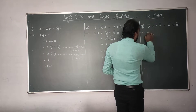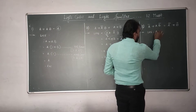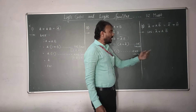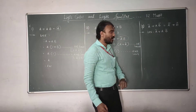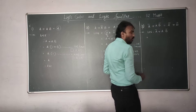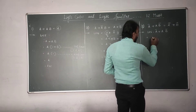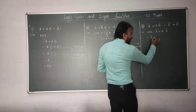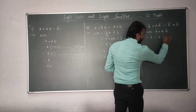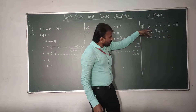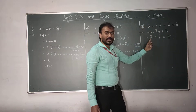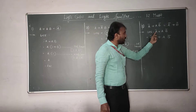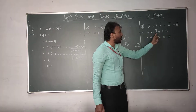I start with the LHS: A complement plus AB complement. Is there anything common between these two terms? Nothing is common. So I write A complement multiplied by 1, and AB complement as it is. Anything multiplied by 1 remains the same, so A complement multiplied by 1 remains A complement — this is mathematically valid.